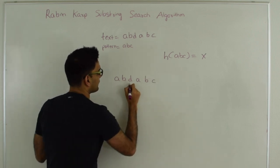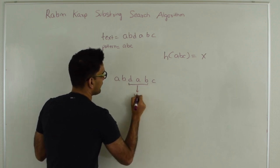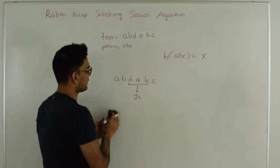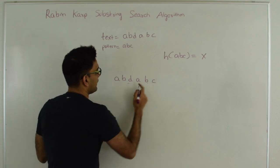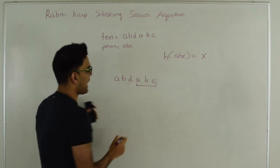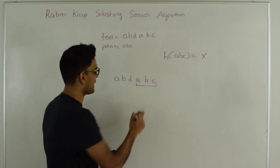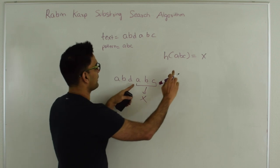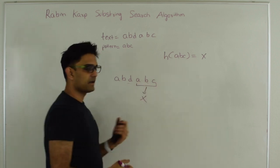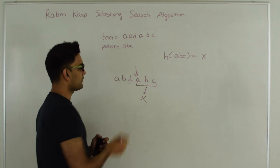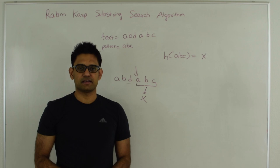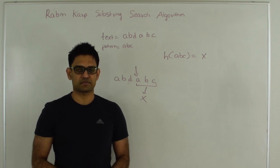We move on to the next character, which generates a hash Y2, and Y2 is not the same as X. So again we move on by one more character. Finally we generate the hash for ABC, which should be the same as the hash of the pattern. Once we have a match in the hash we compare A, B, and C — that is also a match. So we return the index of this A, which is the answer for the substring search. The key question here is how do we efficiently generate hash values — let's look at that next.